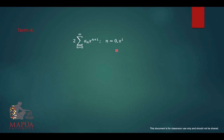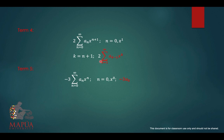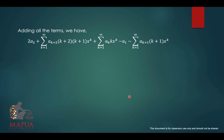For the fourth term, starting at x raised to 1 at n equals 0, we let k equal n plus 1. The new series becomes a_(k-1) times x raised to k. For the fifth term, computing at n equals 0 gives negative 3a_0. Setting k equal to n, the series becomes negative 3 times the summation of a_k times x raised to k from k equals 1 to positive infinity. Substituting everything into the original equation and adding all terms, we have the combined expression.